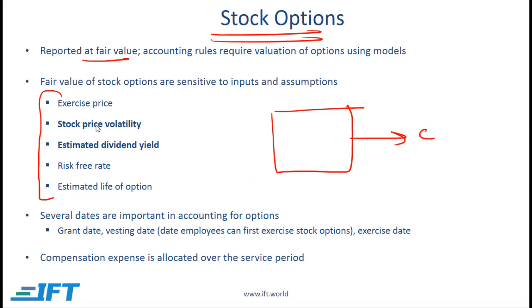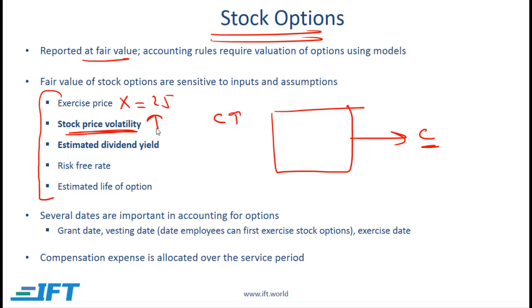Of these inputs, the only one that is completely objective is the exercise price. An employee might get options with a strike price of 25, so there is no ambiguity here, but with these other variables there is some subjectivity. In coming up with the option price we need to assume a share price volatility. The higher the volatility that we assume, the higher the value of the call option. So if a company wants to show a high expense it can increase this assumed volatility, and if it wants to show a low stock option expense it can assume a relatively low volatility.